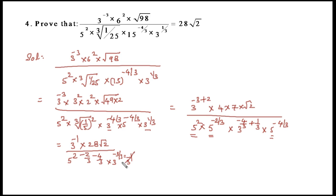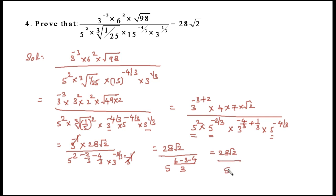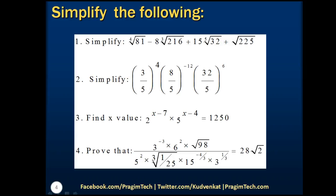Cancelling 3^(−1) in numerator and denominator, and since 5^0 = 1, the expression simplifies to 28√2 / 1 = 28√2. In the next session we will discuss the second chapter, polynomials. Please feel free to provide questions or comments in the comment section. Thank you for listening and have a good day.